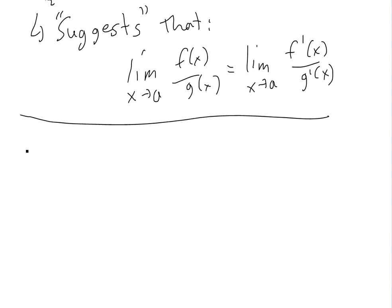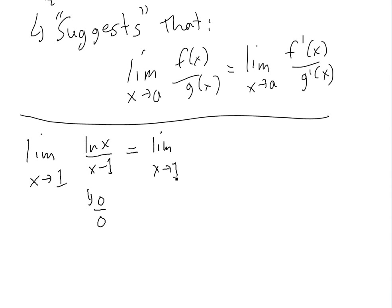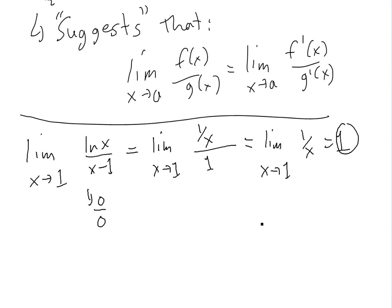So let's take a look back at the function we were trying to find the limit of: the limit as x → 1 of ln(x) / (x - 1). This is a 0/0 indeterminate form, so we can apply L'Hôpital's Rule. Take the derivative of the top, which is 1/x, and the derivative of the bottom, which is 1. So it equals the limit as x → 1 of (1/x) / 1, and putting in 1 gives us 1.